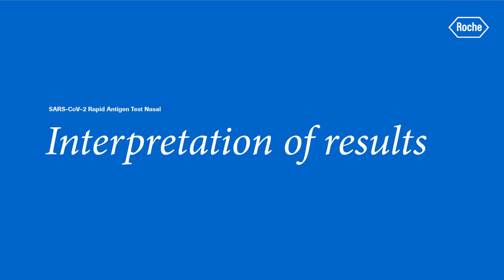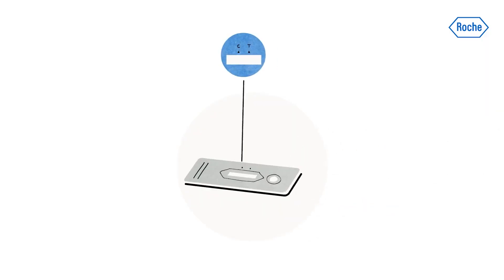Interpreting the results. A colored line appears in the top section of the result window to show that the test is working properly. This is the control line C. Even if the control line is faint or not uniform, the test should be considered valid.